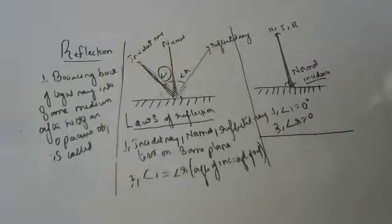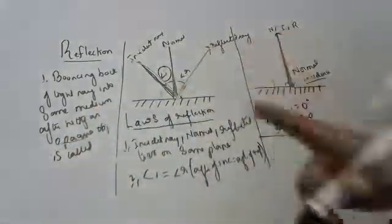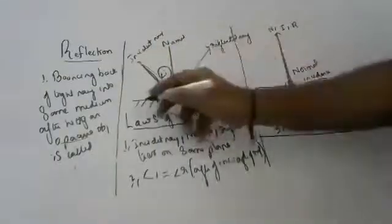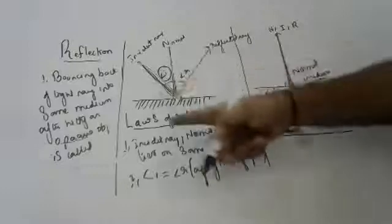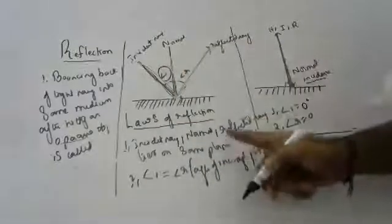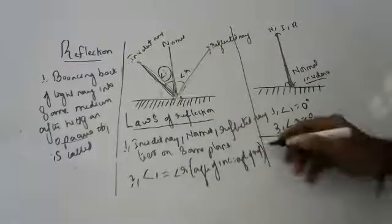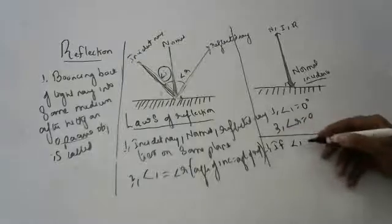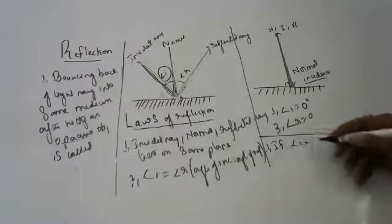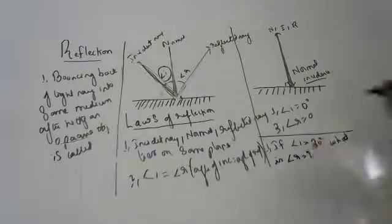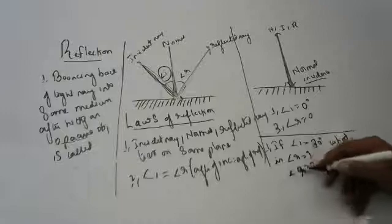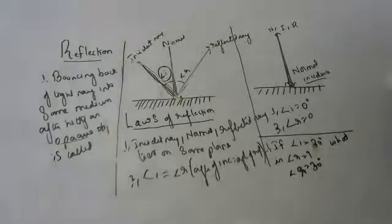So to summarize: reflection is the bouncing back of a light ray into the same medium after hitting an opaque object. The laws of reflection state that all three — incident ray, normal, and reflected ray — lie on the same plane, and the angle of incidence equals the angle of reflection. If the angle of incidence is 30 degrees, the angle of reflection is also 30 degrees.